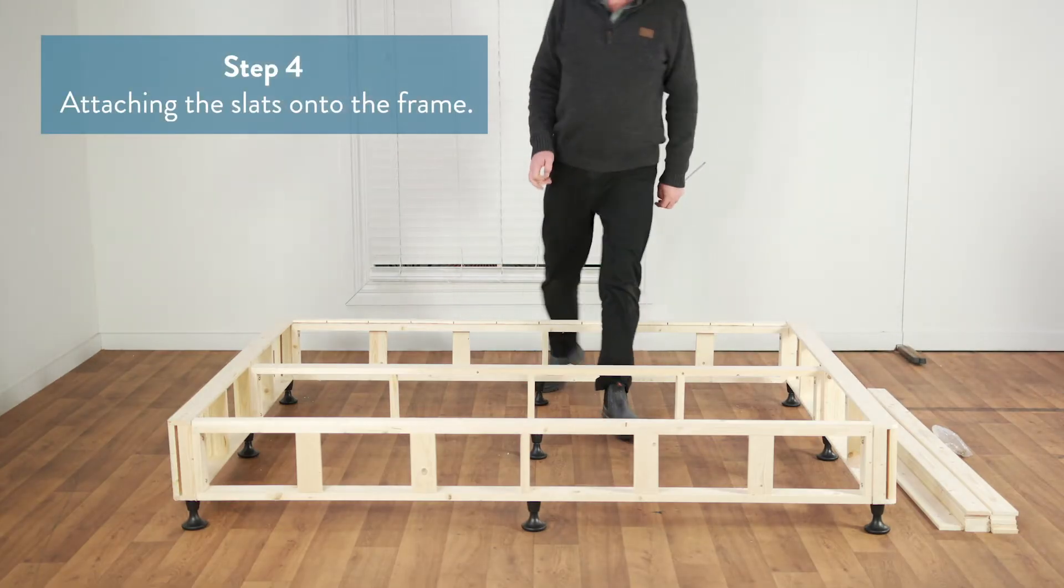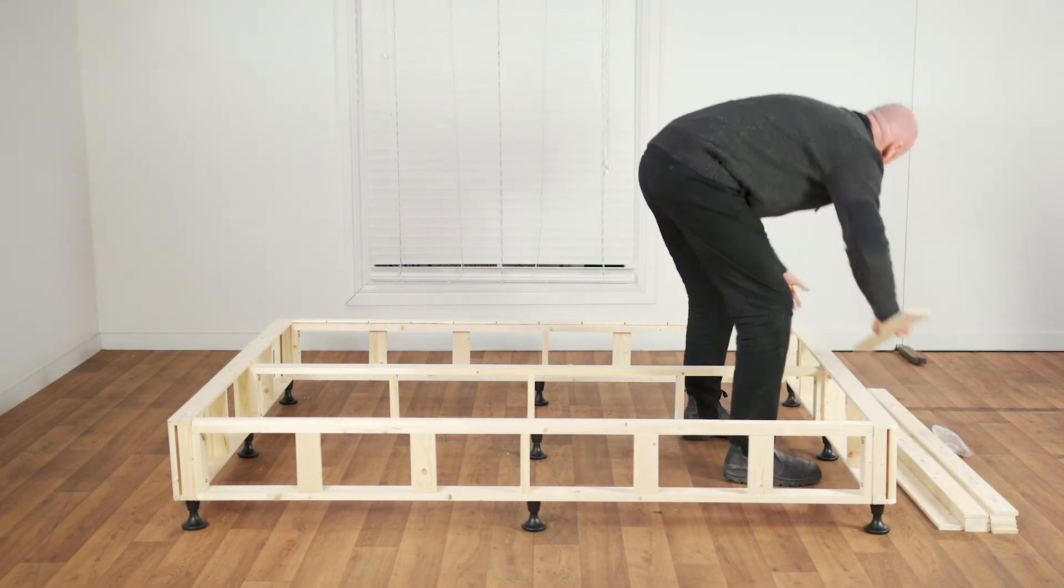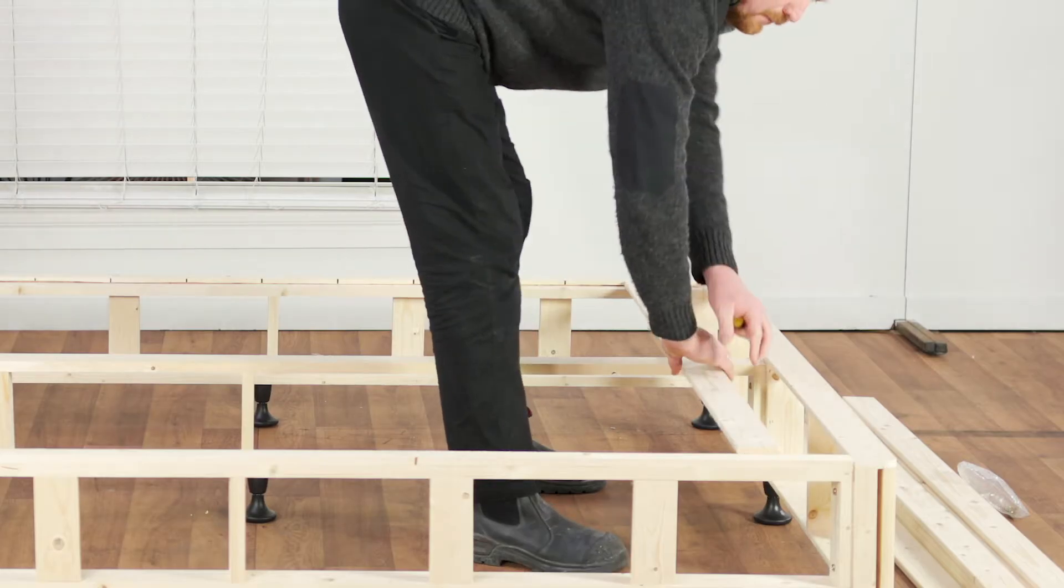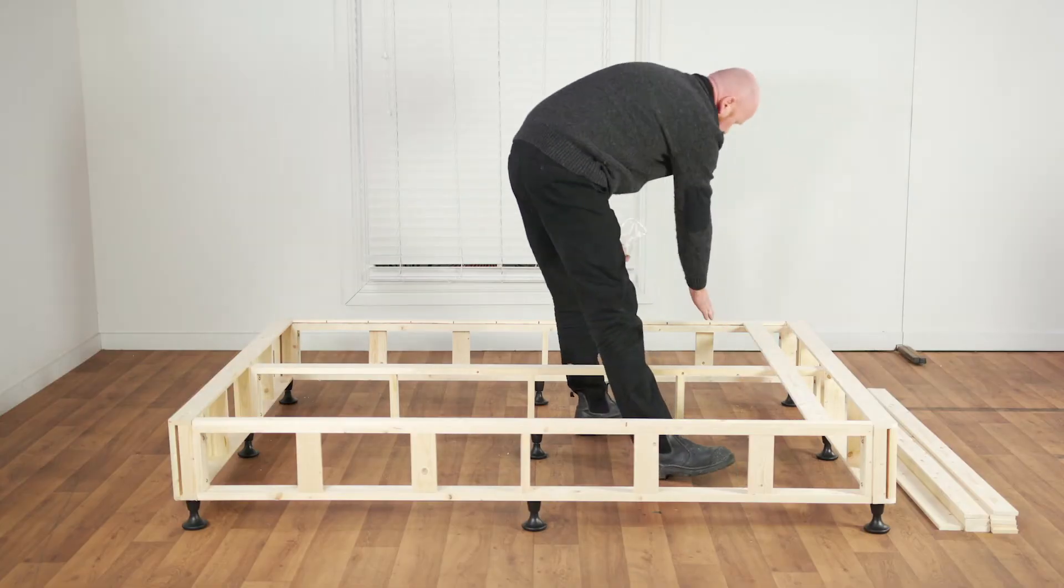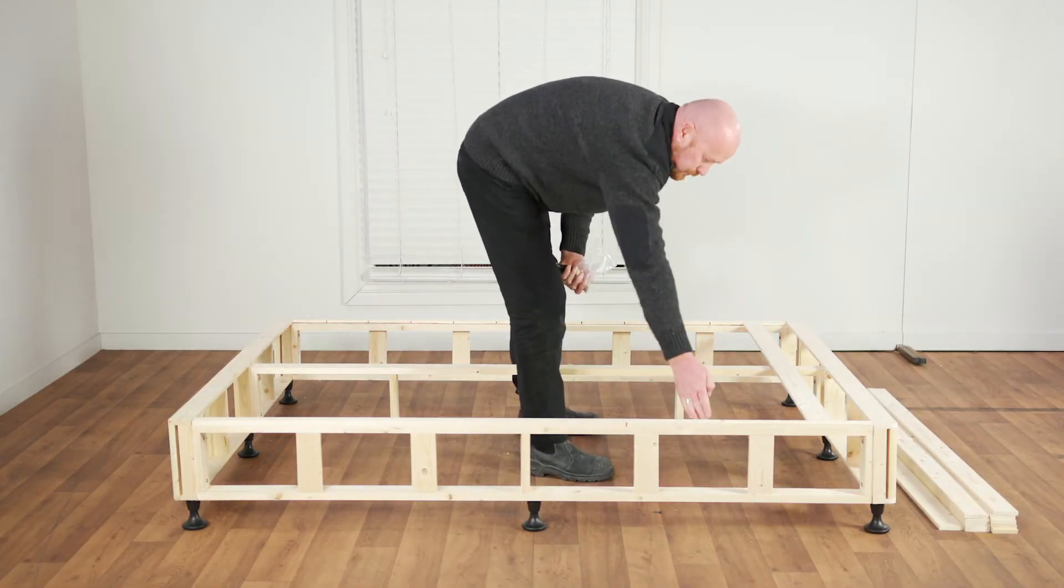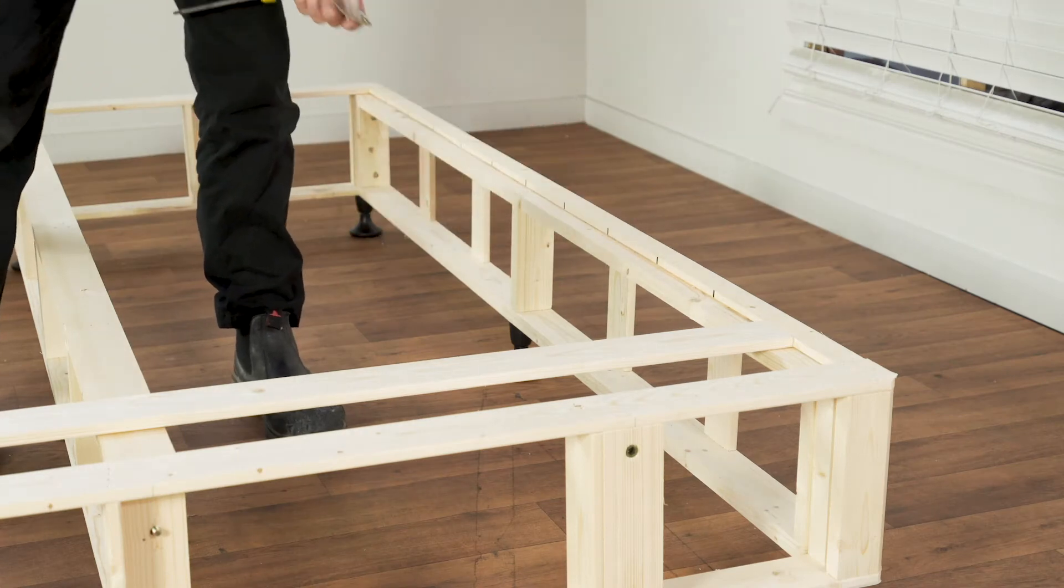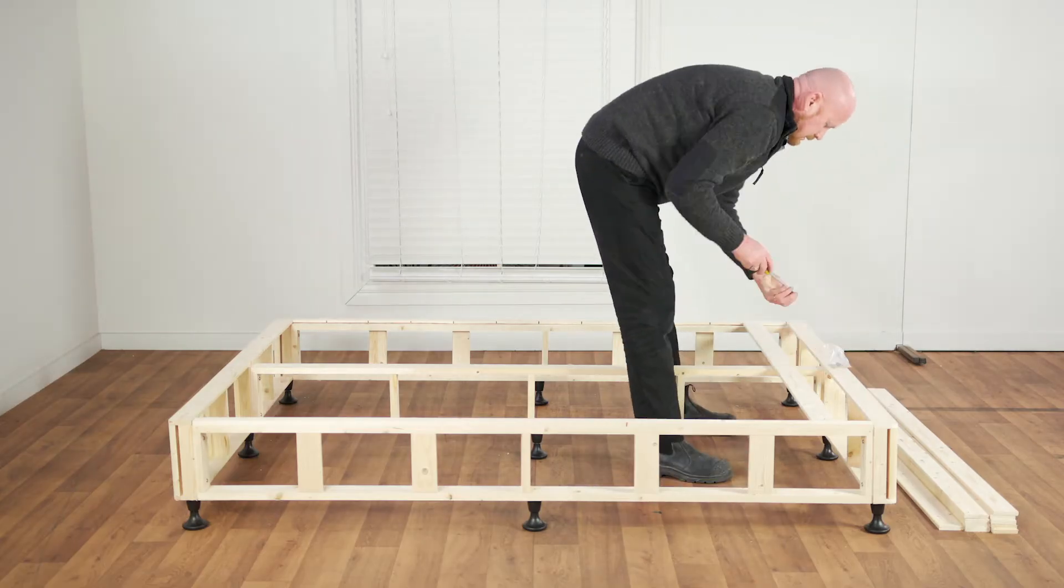Attaching the slats onto the frame: The slats will sit on the inside edge of the frame. The slats sit centred on the black marks running down the two outside lengths of the bed frame. Use the marks to ensure that they are evenly spaced. Place one slat on the frame at a time.